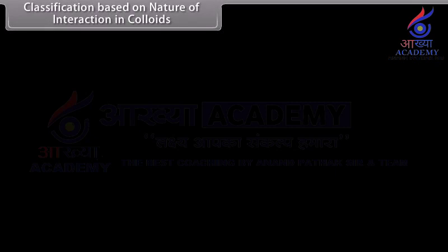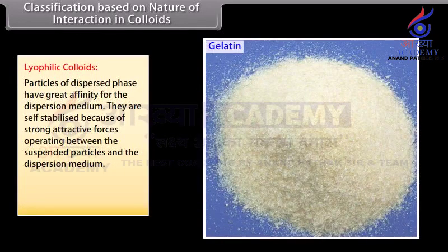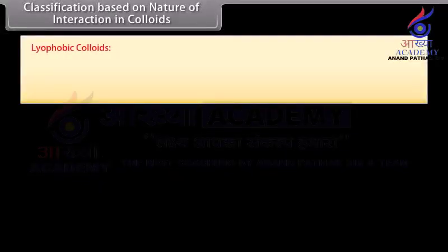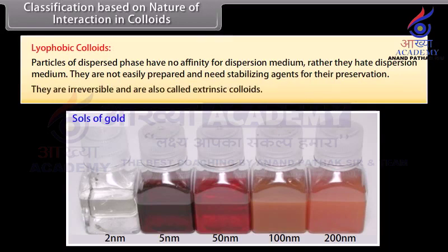Classification based on interaction between dispersed phase and dispersion medium. Colloids are divided into two categories: lyophilic and lyophobic. Lyophilic colloids: particles of the dispersed phase have great affinity for the dispersion medium. They are self-stabilized due to strong attractive forces and are reversible in nature. They are also known as intrinsic colloids. Examples: gums, starch, gelatin, and albumin. Lyophobic colloids: particles of the dispersed phase have no affinity for the dispersion medium. They are not easily prepared and need stabilizing agents for preservation. They are irreversible and also called extrinsic colloids. Examples: salts of gold, silver, and ferric hydroxide.